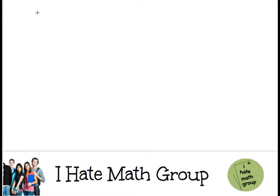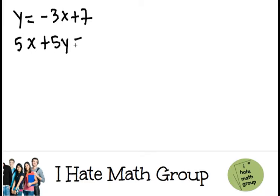Hi guys, welcome to I Hate Math Group. So they give me y equals negative 3x plus 7, and then I have 5x plus 5y equals 15.